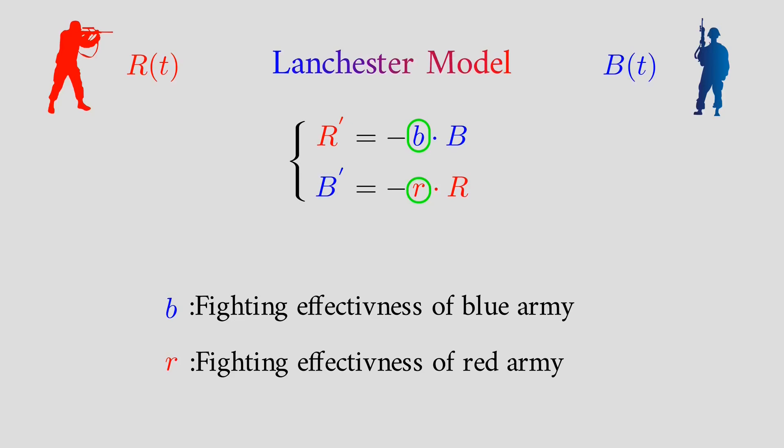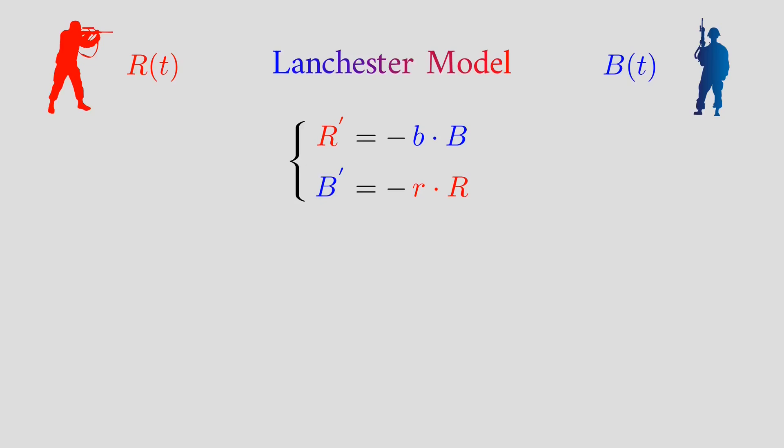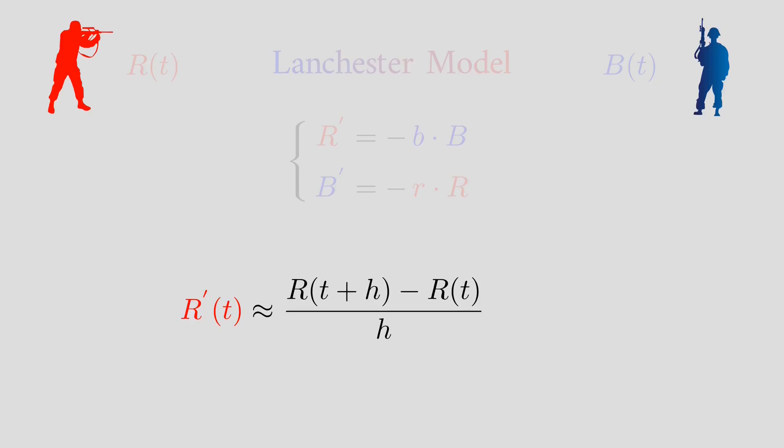Let's explain the idea behind this system of equations. First of all, the derivative of R is basically the rate of change of the number of the red army soldiers. Since there are going to be casualties, the function R is going to be decreasing, so its derivative is going to be negative. If there are more blue soldiers, the rate of decrease of the red army soldiers is going to be larger. So the rate of decrease is going to be proportional to B.